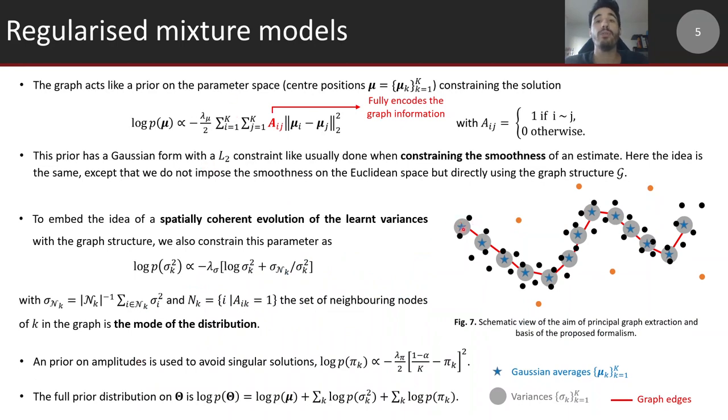The Gaussian clusters are linked together by a given prior graph structure that acts as a regularization term on the parameter space, more precisely on the mu, the center positions of the Gaussian clusters, constraining the solution's smoothness. This is a Gaussian distribution used as a prior with lambda_mu being the precision. You recognize something similar to the usual L2 norm used in statistics to constrain the smoothness of an estimate, but not on Euclidean space but on the graph structure thanks to the adjacency matrix that takes value 1 if i and j are connected and 0 otherwise.